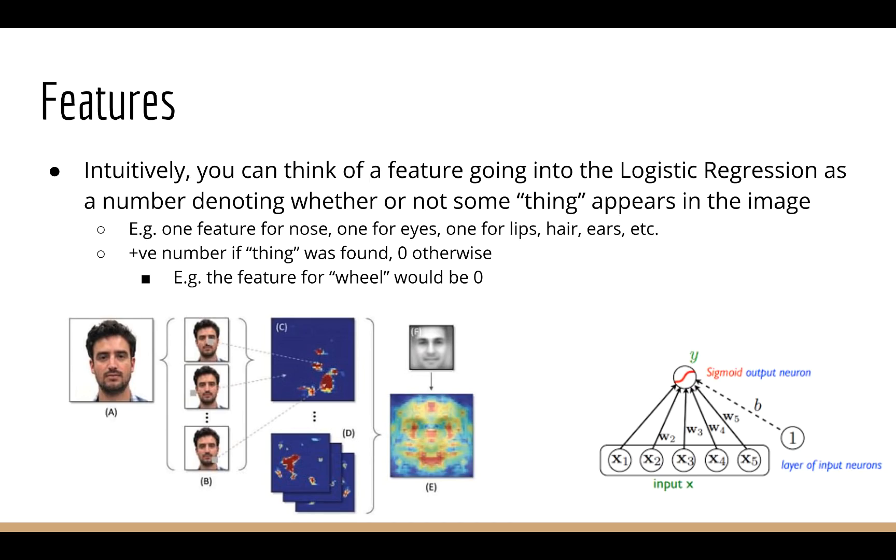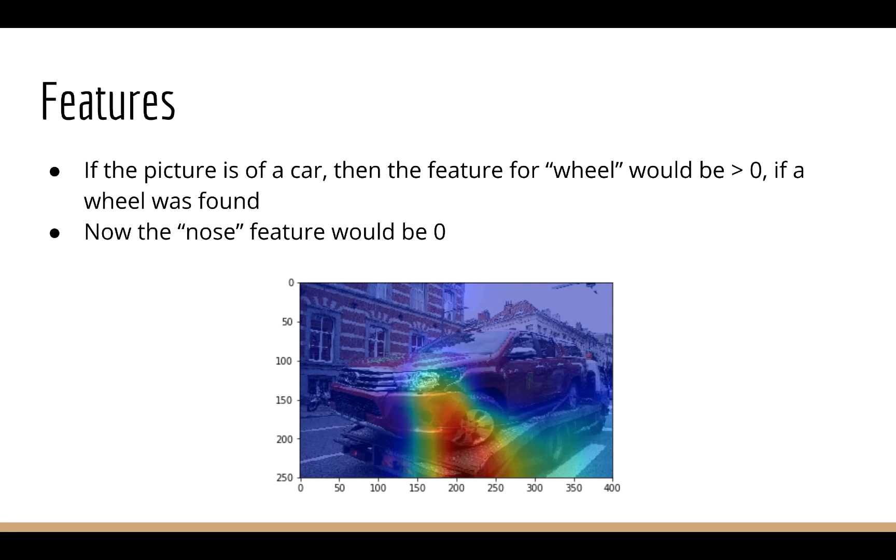You might imagine that if you actually pass in a picture of a face, these features will all end up with positive values. But the feature for some other thing, such as a wheel, will be zero. But what happens if I pass in a picture of a car? Well, if I pass in a picture of a car, then the wheel feature will be positive and the nose feature will be zero. So that's intuition number one. Think of each feature as an actual thing that can be found in an image.